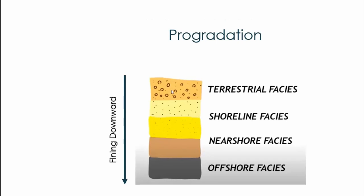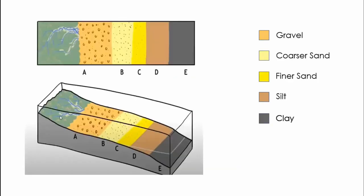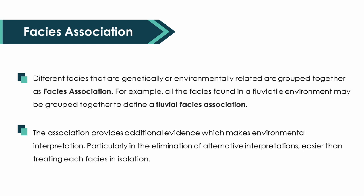If sea level falls, we will find a coarsening downward sequence where marine facies will be found at the bottom and coarser coastal, shallow, and terrestrial facies will be found at the top. These changes are known as progradation. Walter stated that the facies in this particular statement are found laterally adjacent to each other at one time. That was my part; facies association will now be explained by my teammate.